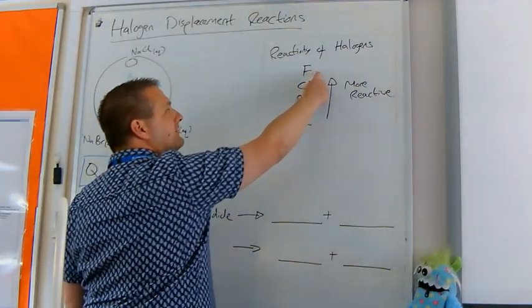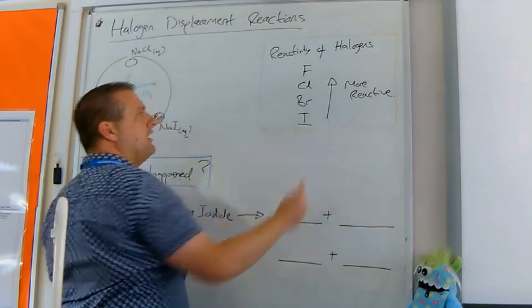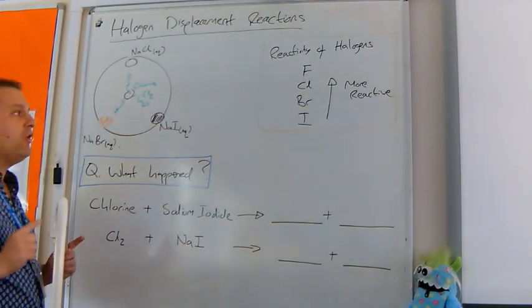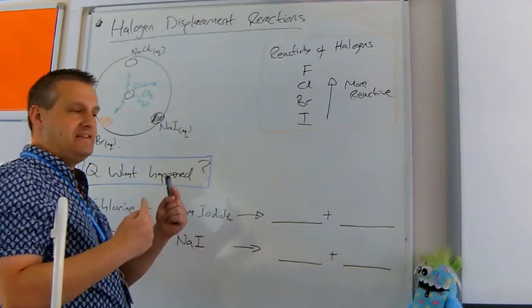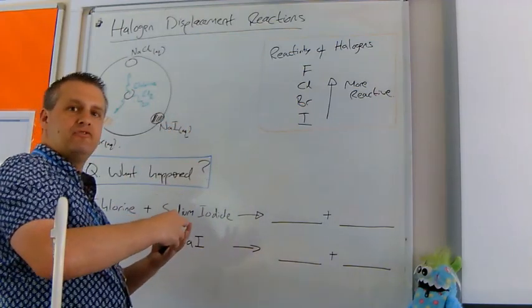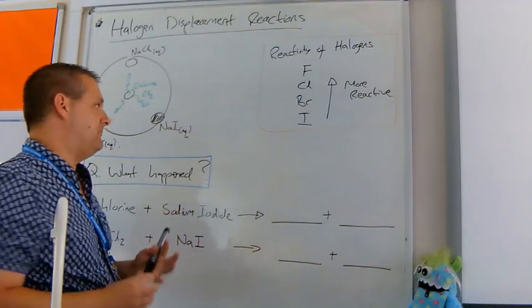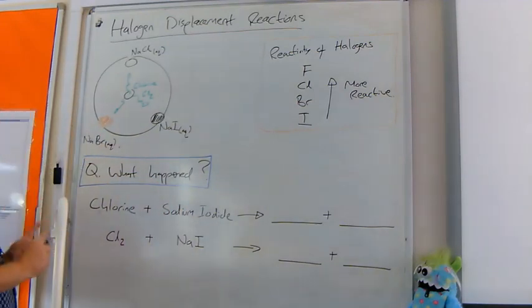Fluorine is the most reactive, then chlorine, then bromine, and iodine is the least reactive. If you remember our golden rule of displacement, the more reactive one is the one that wins in a sense. It's the one that can be bonded to the other thing. The less reactive one is the one that gets left out.